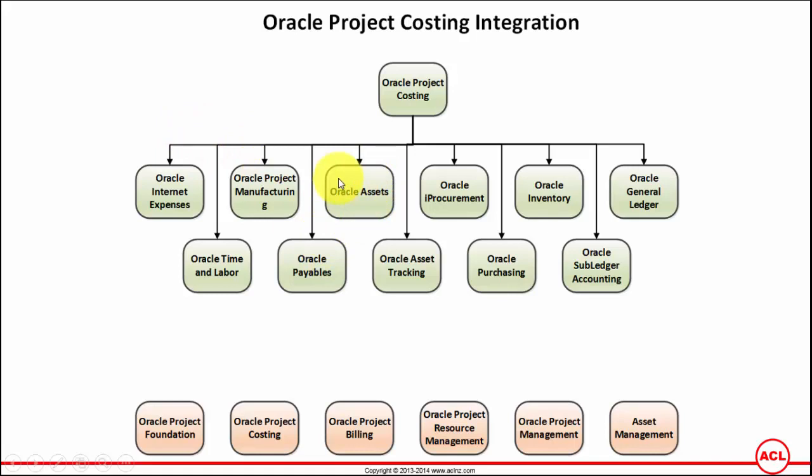For items that you have purchased from purchasing which are assets, they can be transferred to Oracle Assets after they have been paid. While the purchasing is happening, you give a reference to the project, so they are project-related items. A second integration is that you can define construction-in-process assets in Oracle Project Costing, and once you are ready to capitalize those assets, you transfer them to fixed assets and the costs incurred are captured within Oracle Project Costing.